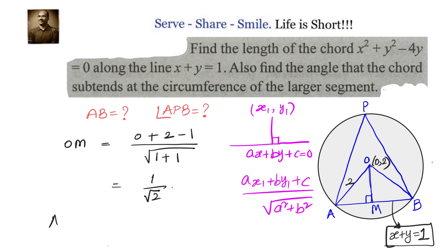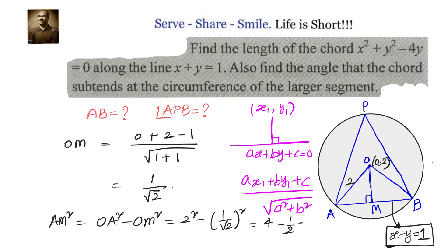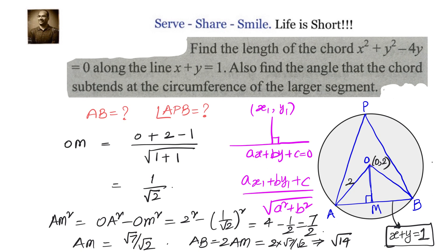By Pythagoras' theorem in triangle OAM: AM² = OA² - OM² = 2² - (1/√2)² = 4 - 1/2 = 7/2. So AM = √7/√2. Since AB = 2 × AM, we get AB = 2 × √7/√2 = √14.